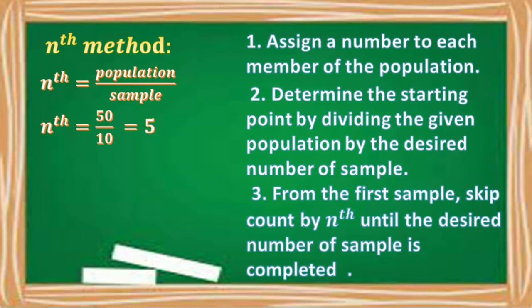Number three, from the first sample, which is 5, skip count by nth until the desired number of sample is completed. So, 5 being the first sample, then skip count by nth and our nth is 5.